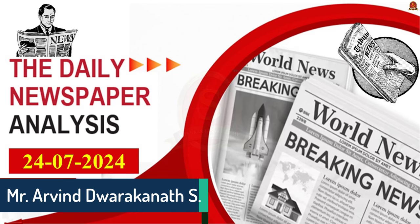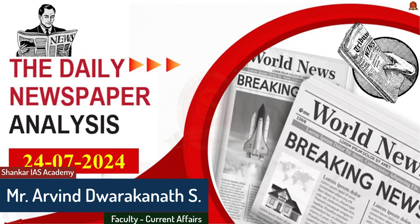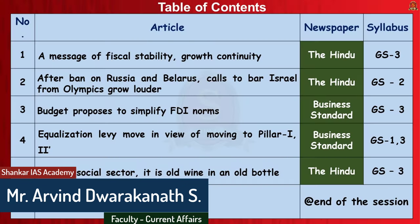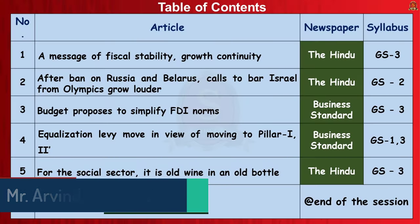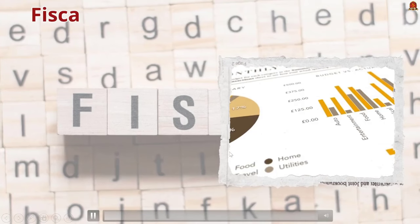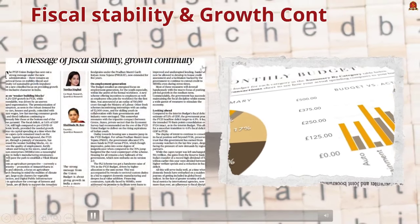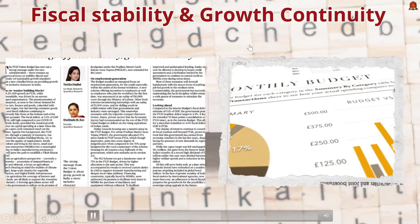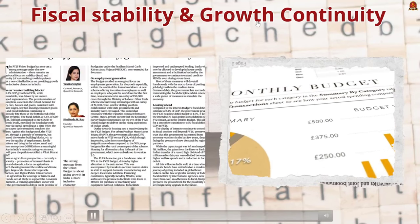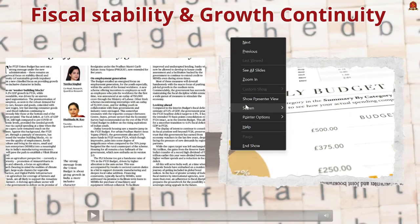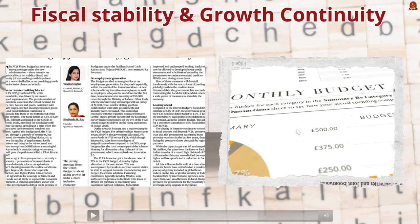Welcome to today's newspaper discussion brought to you by Shankar IAS Academy. Today's date is 24-7-2024. The next article we are going to discuss is about Budget 2025, which mainly focuses on improving the quality of employment, agriculture, and MSME by allocating funds to various schemes. With this backdrop, let us see a UPSC Mains question with our usual answer writing approach.